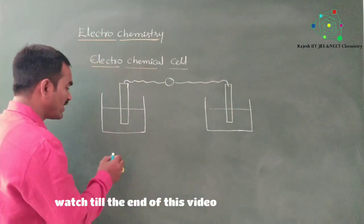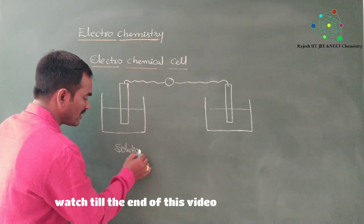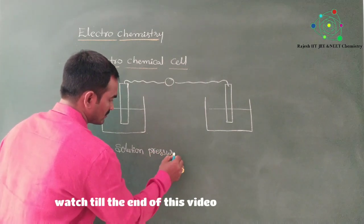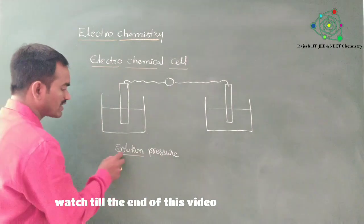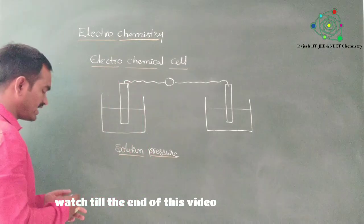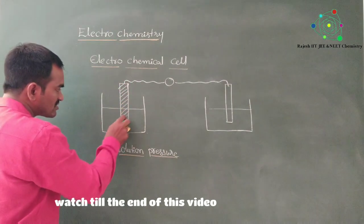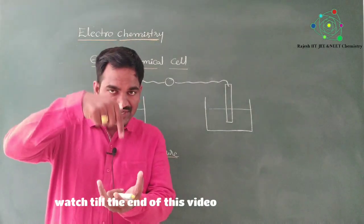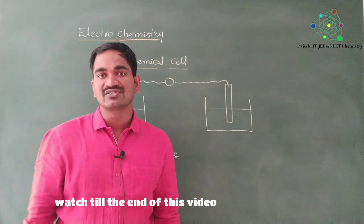So first I want to explain to you about solution pressure. What is meant by solution pressure? For example, you take a metal rod — any metal rod. Whenever it is dipped into its ionic solution, there will be two types of pressures produced in that solution.